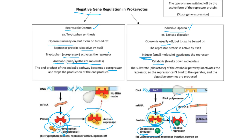This is usually catabolic processes — catabolic means you break something down. In this case, the substrate, lactose or allylactose, is what the catabolic pathway starts with and then breaks it down into its subunits. So that's negative gene regulation in both cases, whether you're turning it on or turning it off. In both cases you've got a repressor, and if the repressor is bonded to the operator, then the whole operon is turned off.